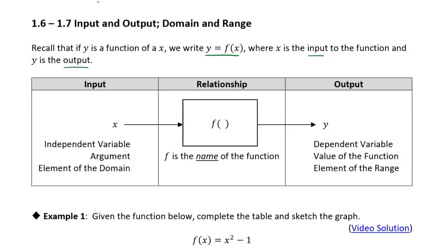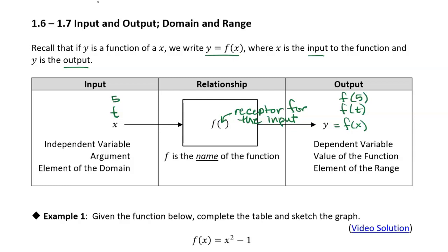One thing I want to emphasize is that these parentheses are like the receptor for the input. So wherever we see parentheses, we can replace it with whatever the input is. In this case the input is x, giving us f of x. If we put in t, we get f of t. If we put in five, we get f of five. We're just replacing the input into the parentheses — f is the name of the function and the parentheses are the receptor for the input.